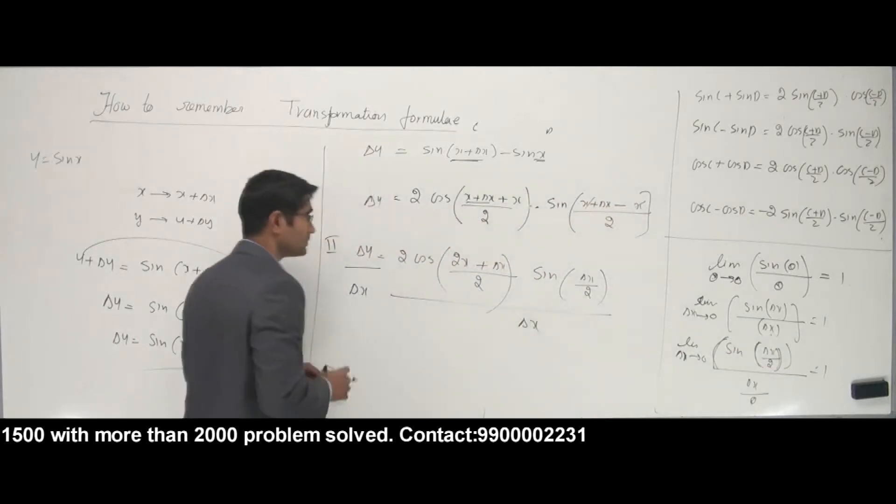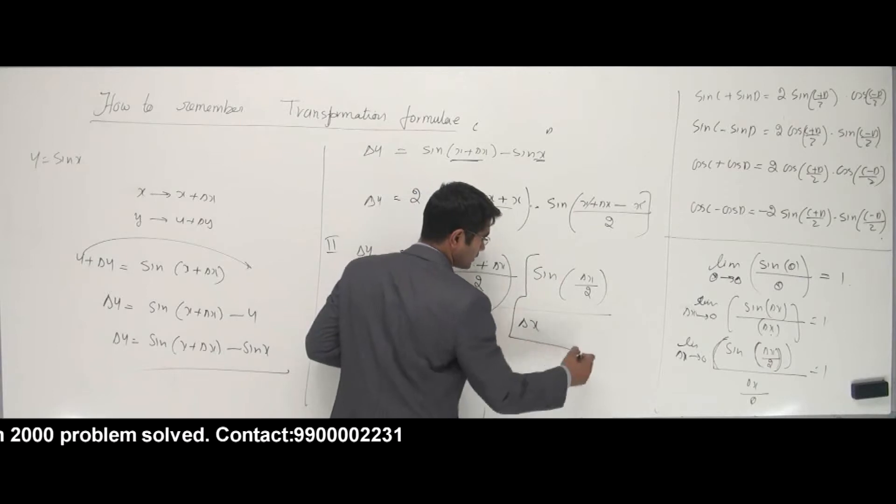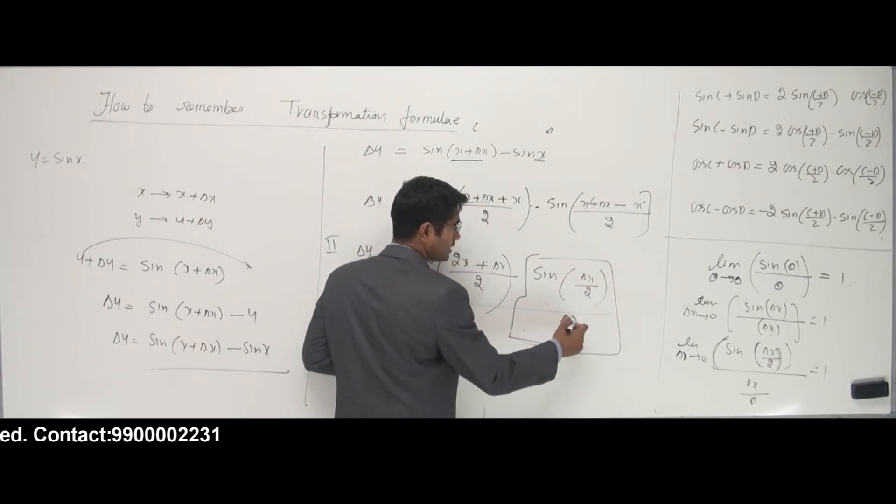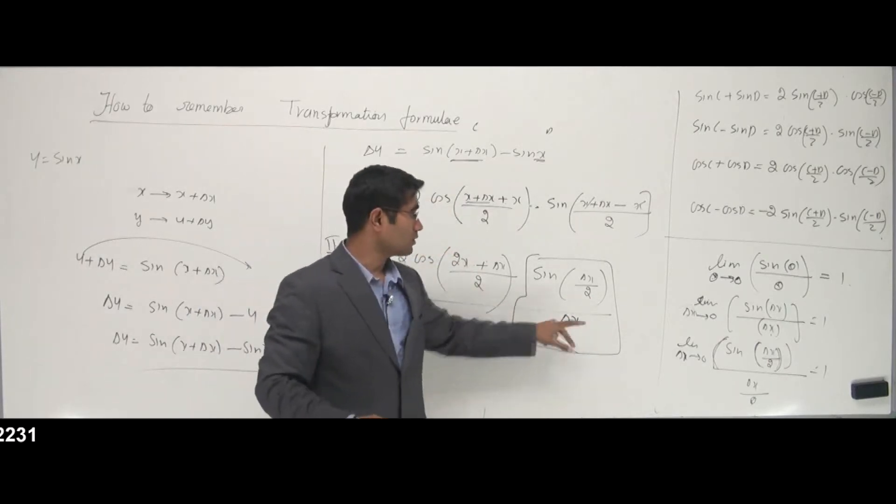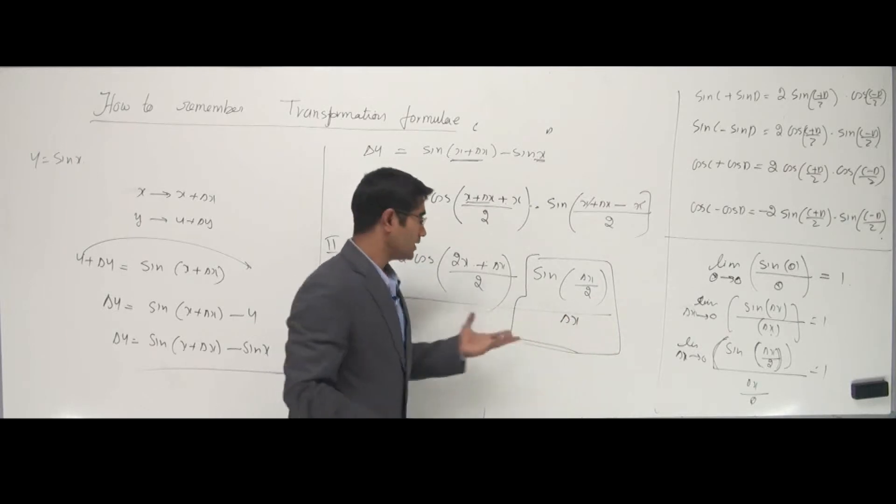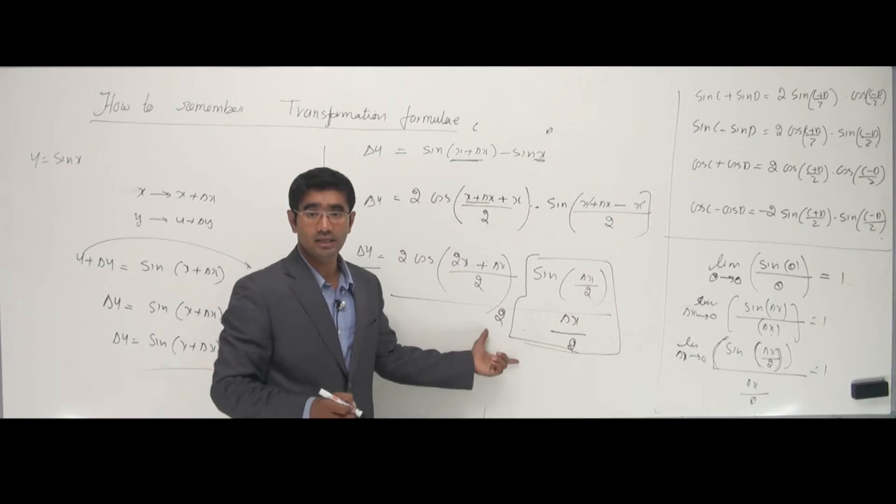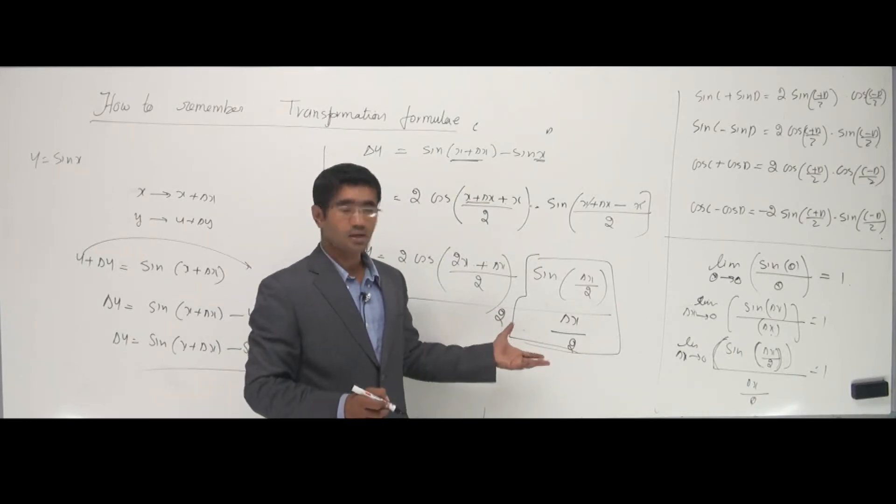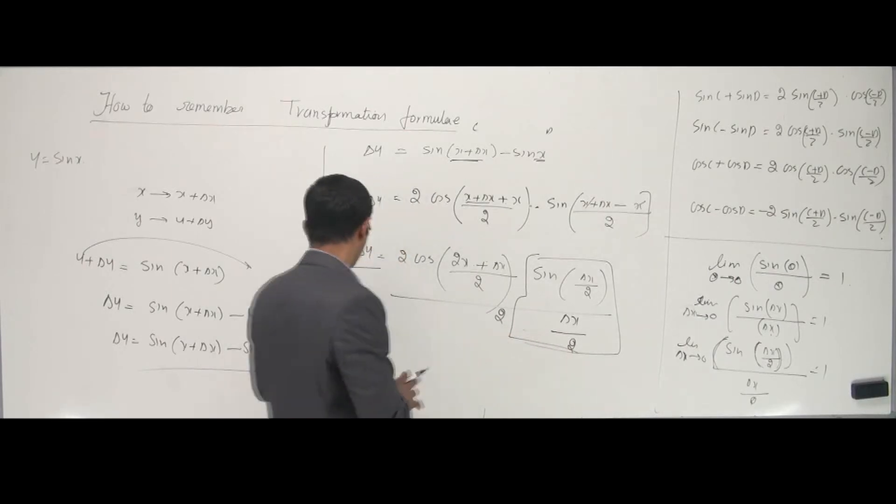In this case, I do have sin of delta x by 2. But, the denominator is only delta x. I need a 2 down here. If there was a 2 down here, I could have used that formula, right? But, there's no 2 here. So, what to do? Write a 2. That's it. Just write a 2 here and write a 2 here. This is not illegal in maths. I'm just multiplying by 2 here and dividing by 2 here. So, it doesn't make a difference. Now, what happens? I can see.